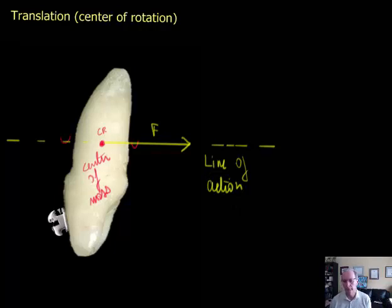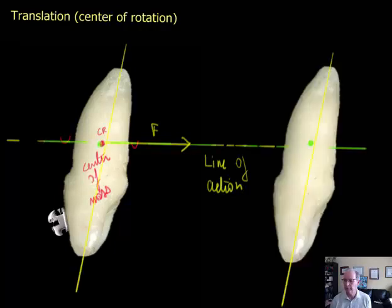The tooth will move along the line of action without any rotation, as shown in this drawing. So the tooth axes stay constant and the center of rotation is at infinity.